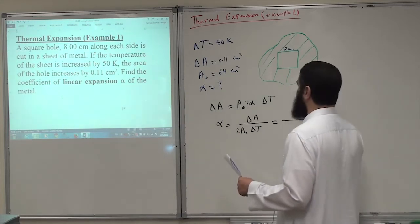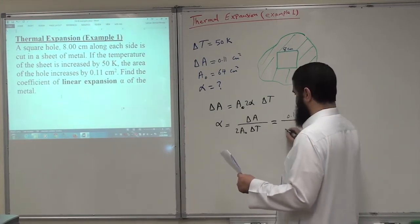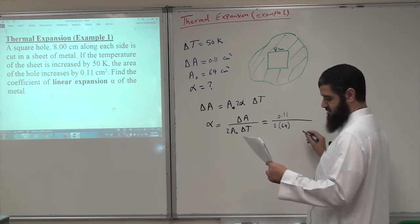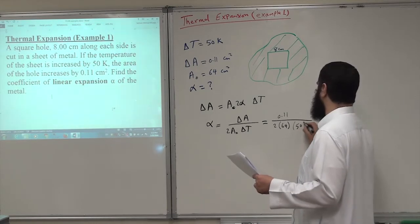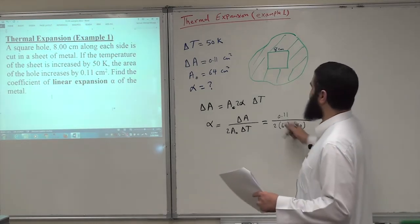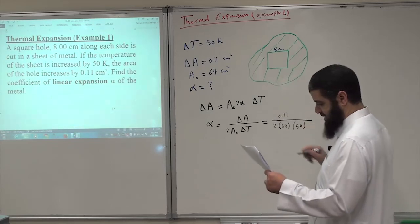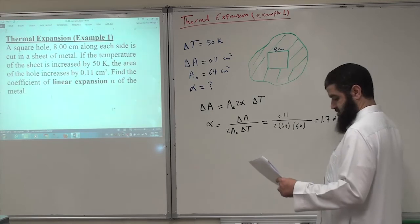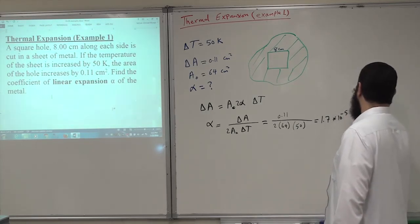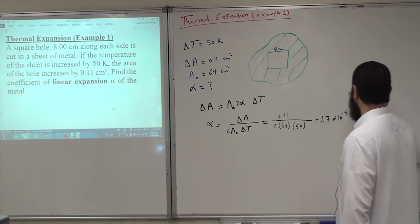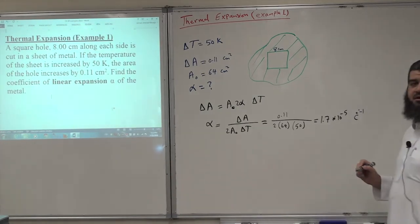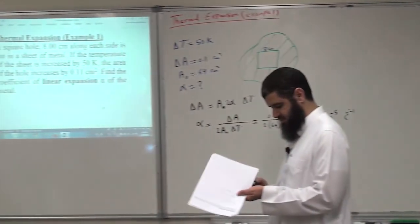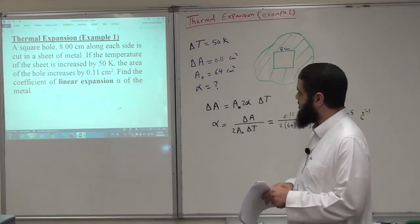And this is equal to 0.11 centimeter squared divided by 2, 64 centimeter squared. So centimeter will cancel with the centimeter. And delta T is 50 degree C or 50 Kelvin because the change in Kelvin is the same as the change in Celsius. And this is equal to 1.7 times 10 to the minus 5 per degree C or per Kelvin. It is the same change both on Celsius and on Kelvin scales.